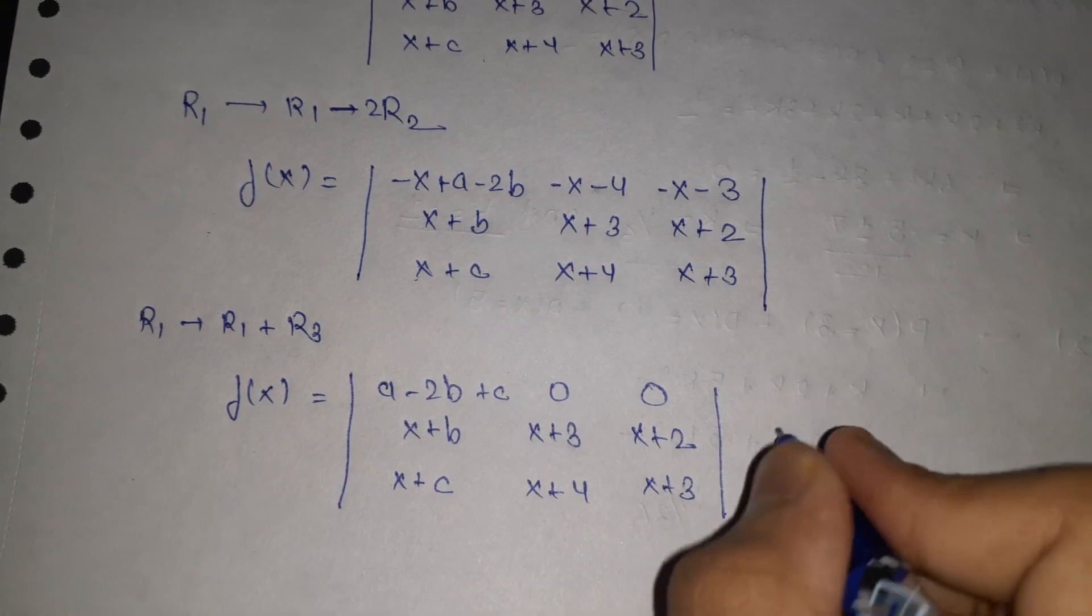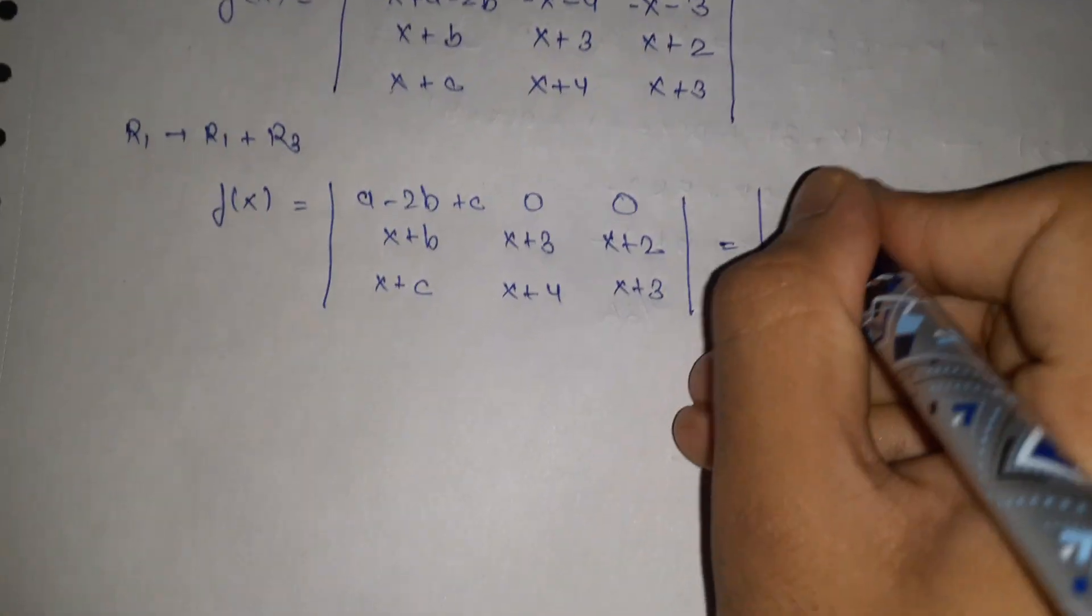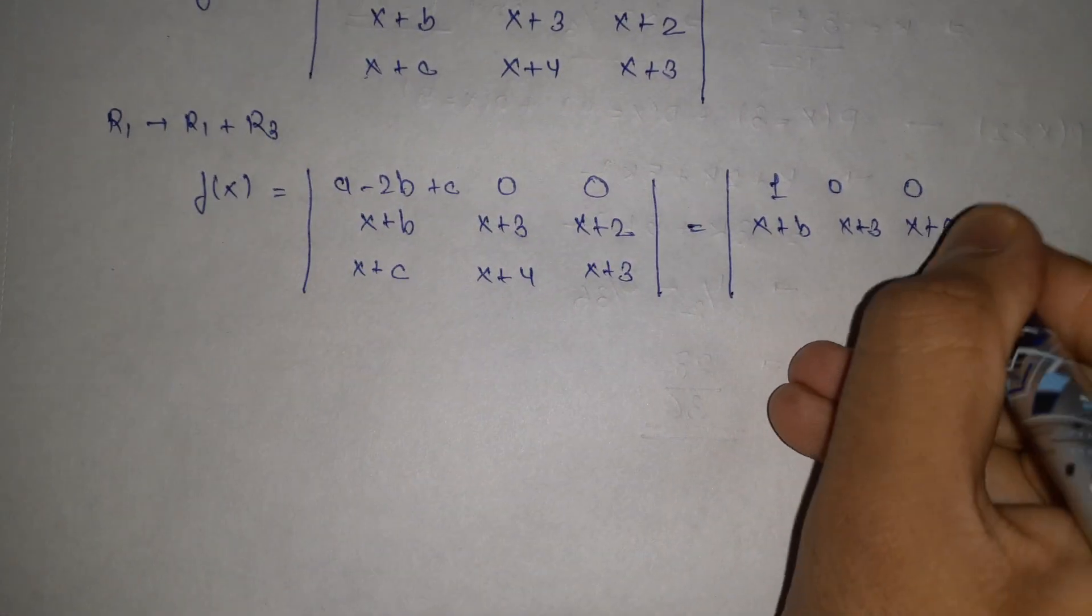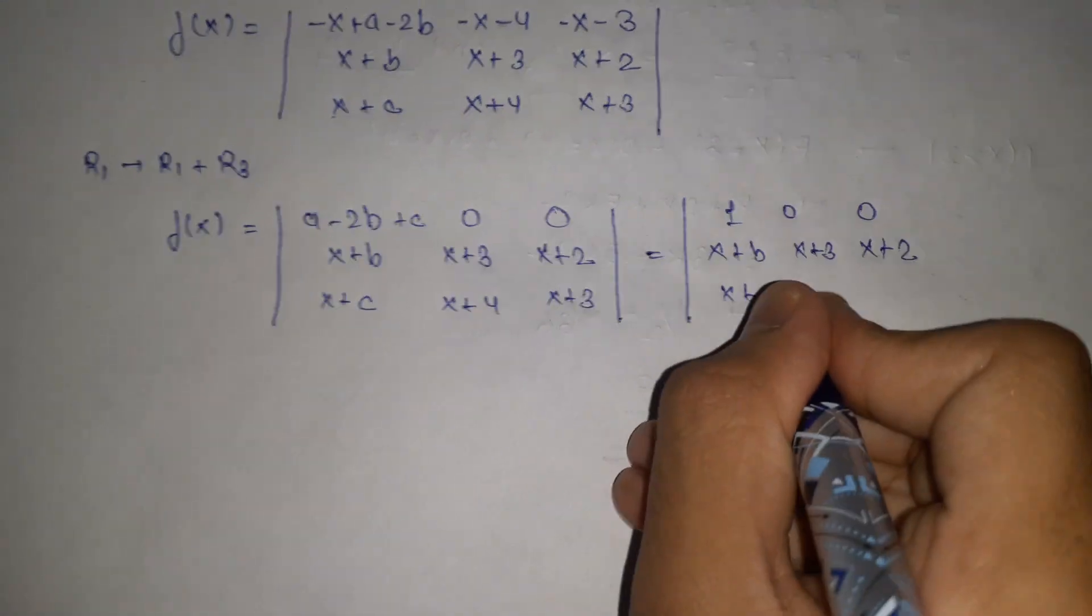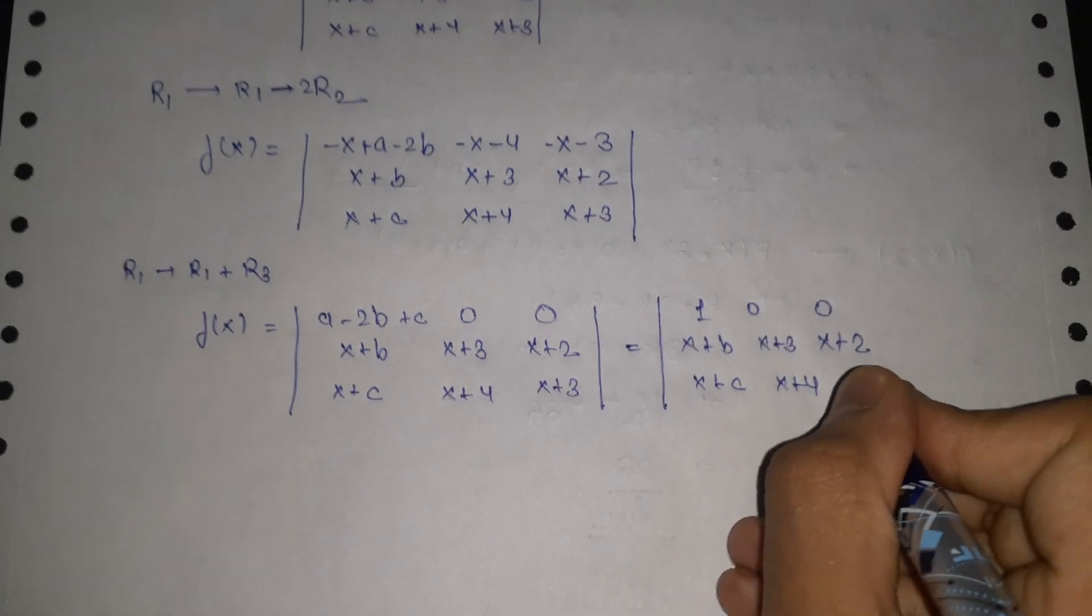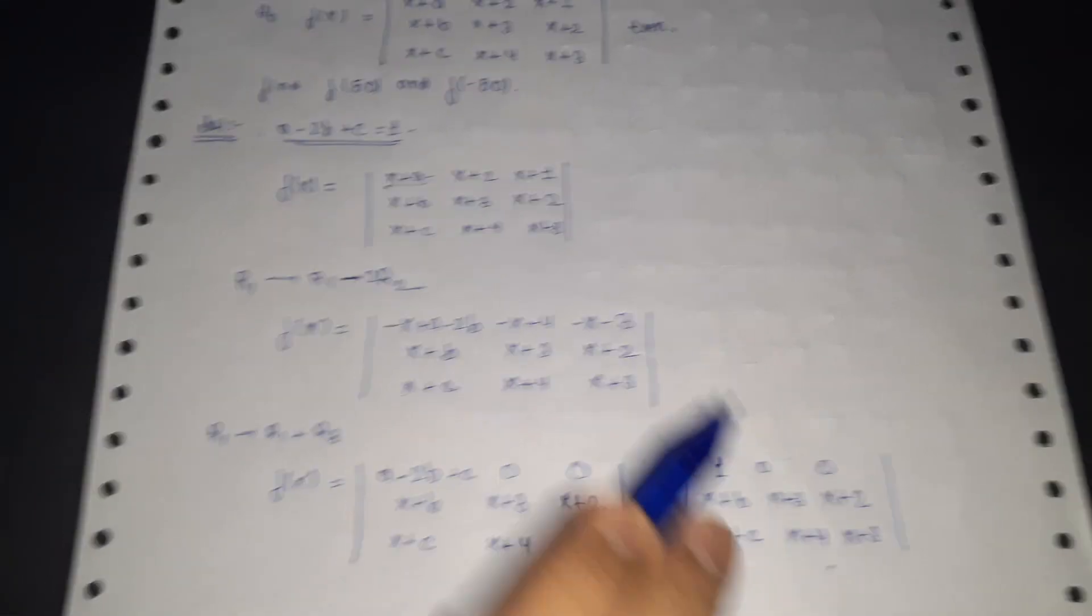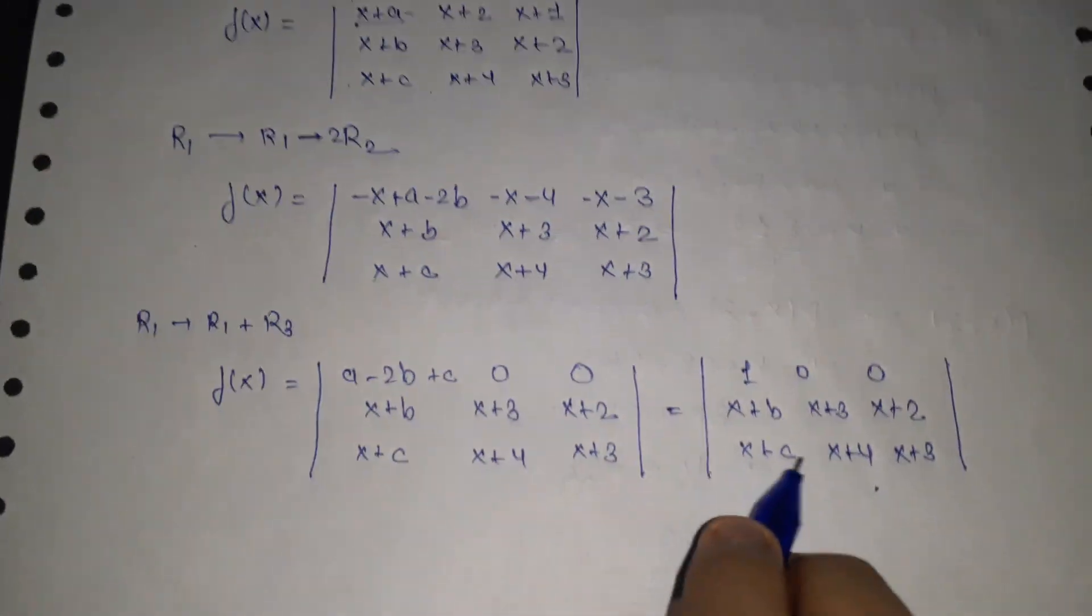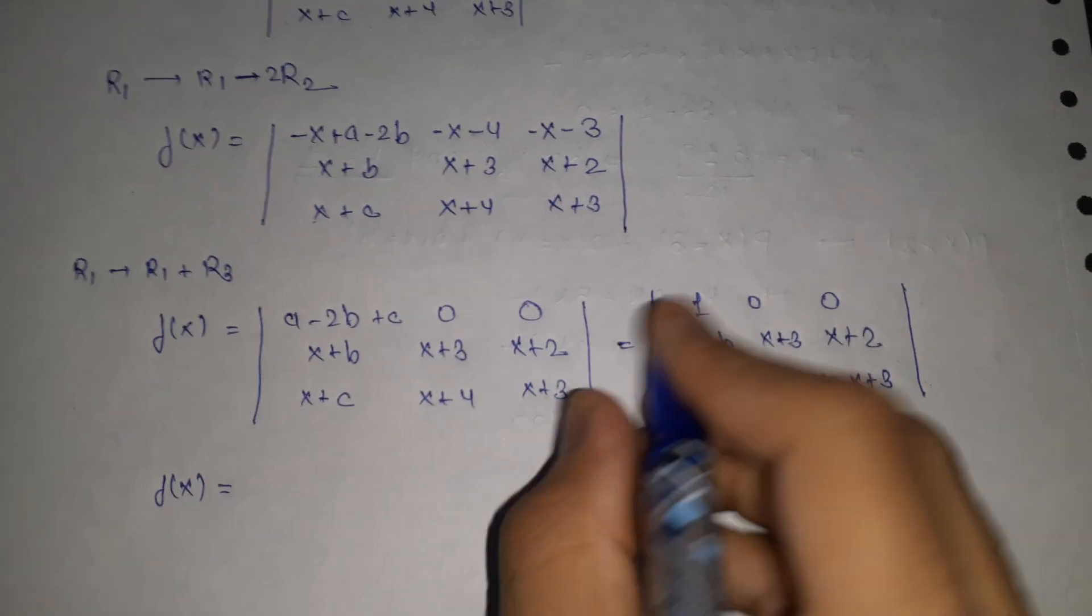Now a minus 2b plus c is 1, so this determinant reduces to—since only elementary row operations are done, the determinant does not change if we apply elementary row operations. So this determinant is same as the original determinant, as stated by properties of determinants.